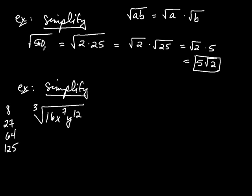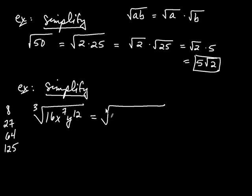Just like I saw 50 as 2 times 25 where 25 was a perfect square, can you think of a factorization of 16 that involves one of these perfect cubes? Of course — you can see that 16 is 2 times 8. So let's write that. This is going to become the cube root of 2 times 8, which is a factorization of 16 involving a perfect cube.